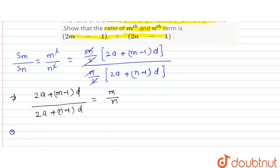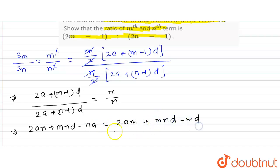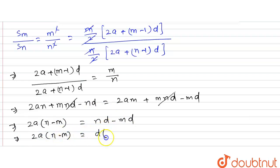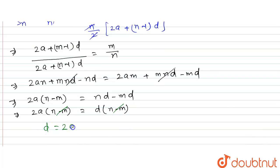We can write this as: 2an + mnd - nd = 2am + mnd - md. The mnd terms cancel out. We get 2a(n - m) = d(n - m), so (n - m) cancels out, and we find the value of d: d equals 2a.